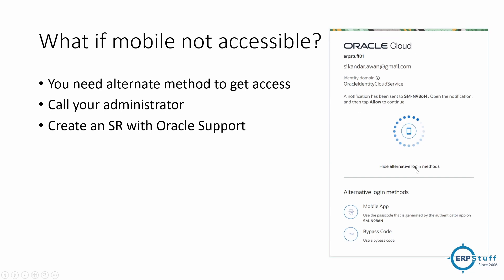Let's say you don't have your mobile phone. If you click on 'Alternate Method,' you get two options. The first is 'Alternate Mobile App - use a passcode generated by the authenticator.' It can also display a few digits you can type in. But since you don't have your mobile phone, those options are not available. The second option is 'Use a Bypass Code.'